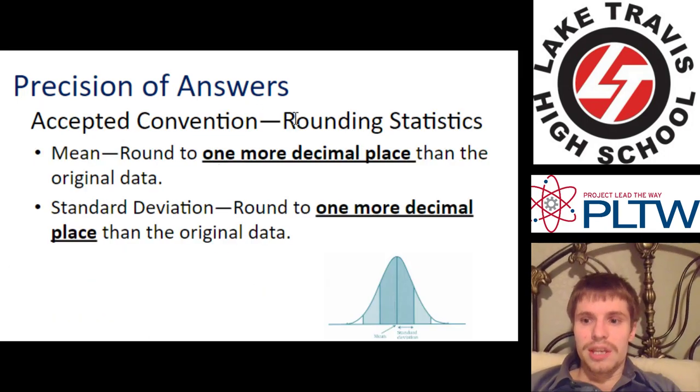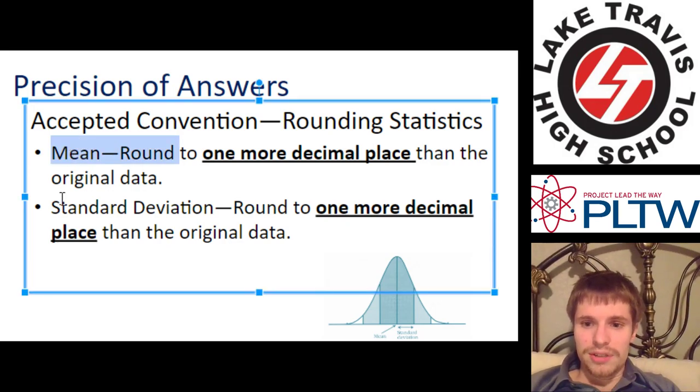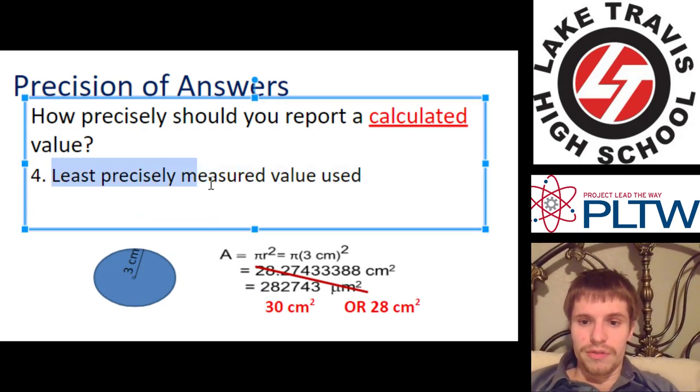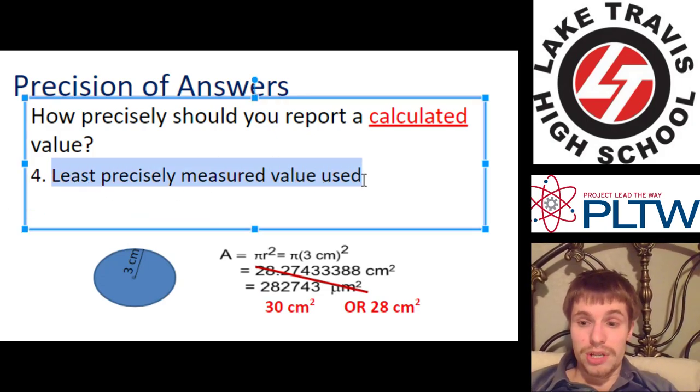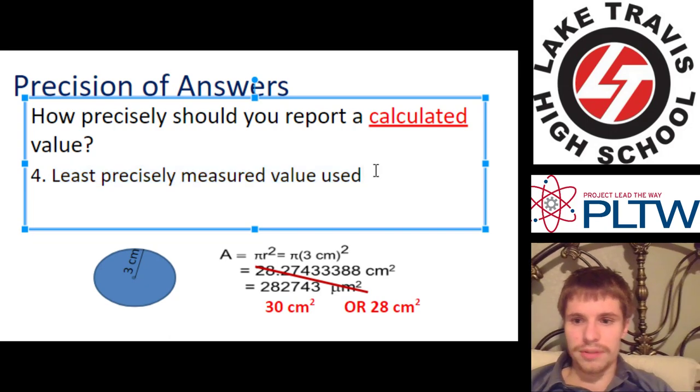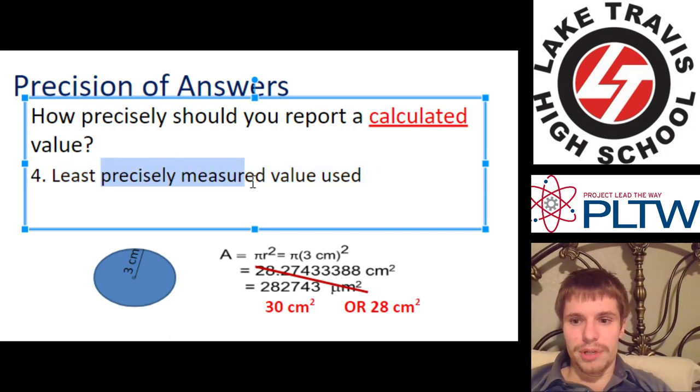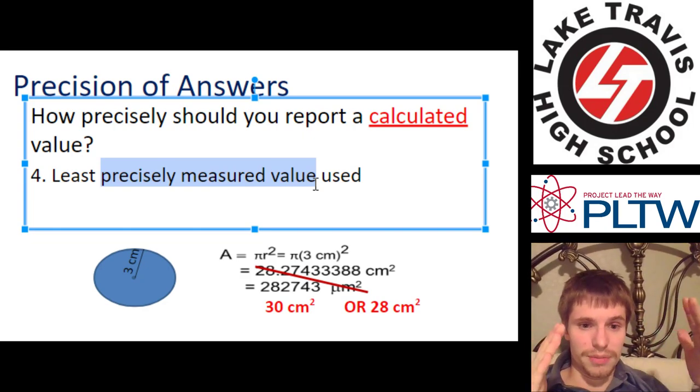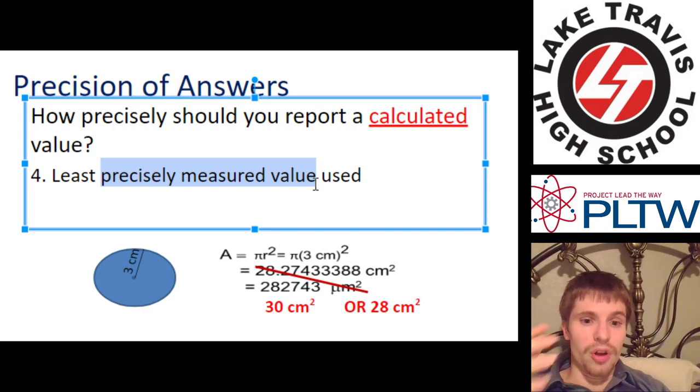Another accepted convention is in statistics. Round both mean and standard deviation to one digit pass, one more decimal place than the original data. One more decimal place than the original data for mean and standard deviation. Then, the fourth rule, least precisely measured value. If you're doing a calculation with measured values, which is all the time in engineering and physics and other sciences, you need to consider the least precisely measured value because if you round to more decimal places than that least precisely measured value, then you're going to insert some false precision.